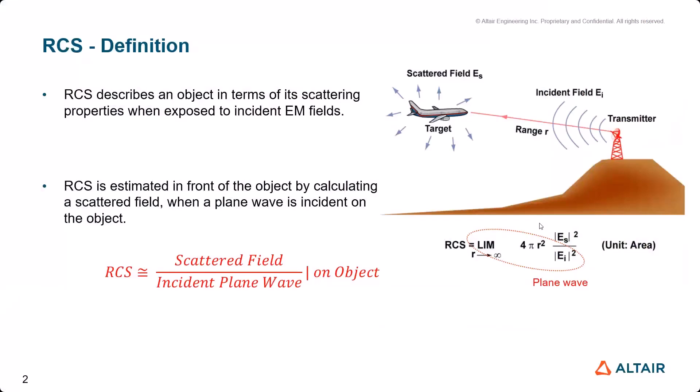For RCS calculation you need two different fields: the first one is scattered field and the second one is incident field. The RCS formula gives the idea of how to calculate RCS value. According to this formula, when R is approached to infinite, then 4πR² over...